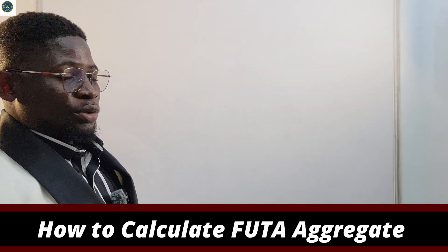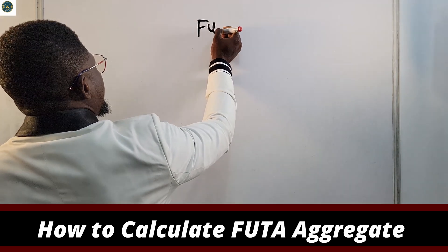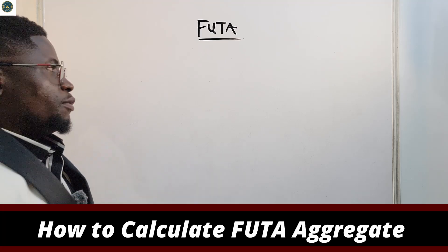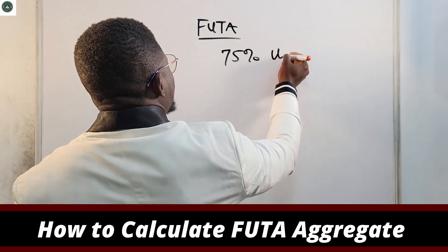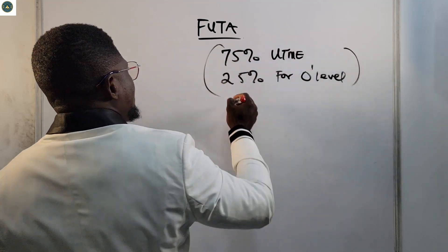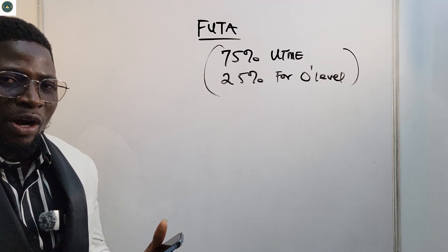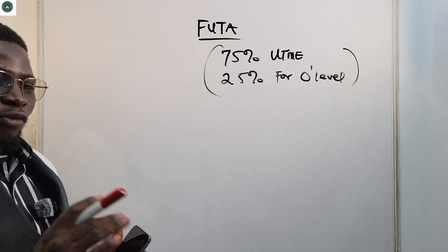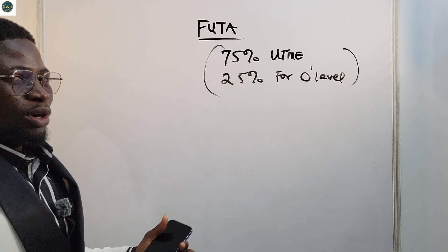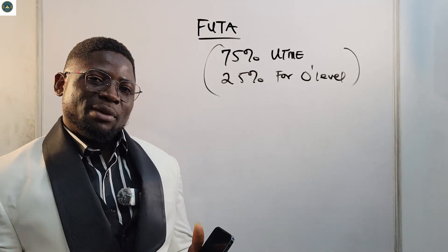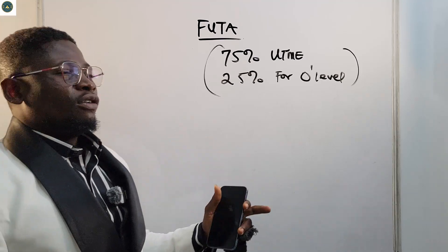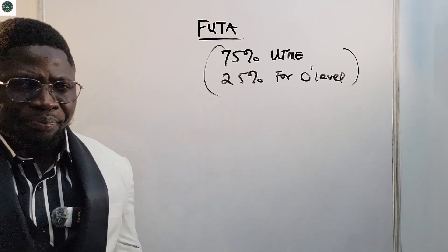Welcome to the board. We want to see how to calculate our aggregate for FUTA — Federal University of Technology Akure. First of all, FUTA uses a formula of 75% for UTME and 25% for O-level. So your aggregate comprises 75% of your UTME score and 25% of your O-level grades. Score very high in your UTME and get very good grades in your O-level and you will be good to go.